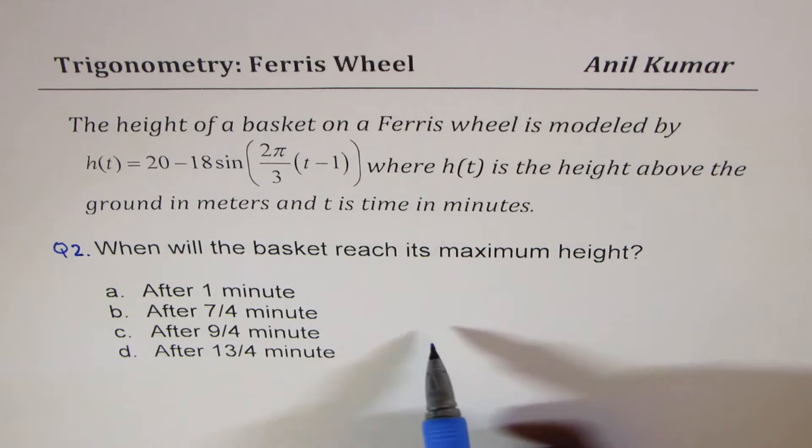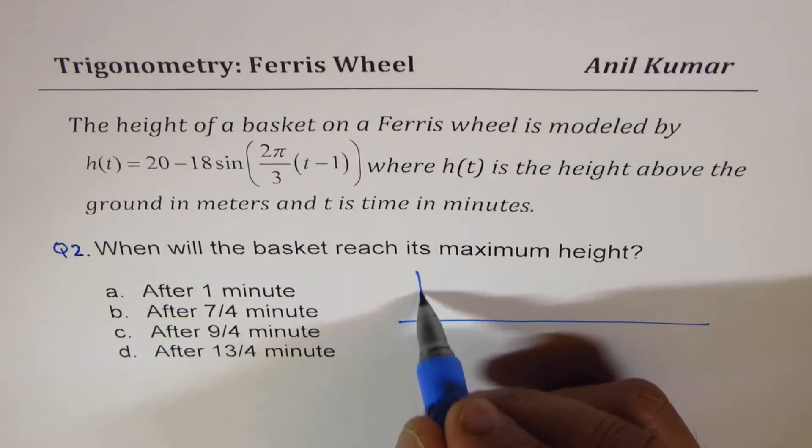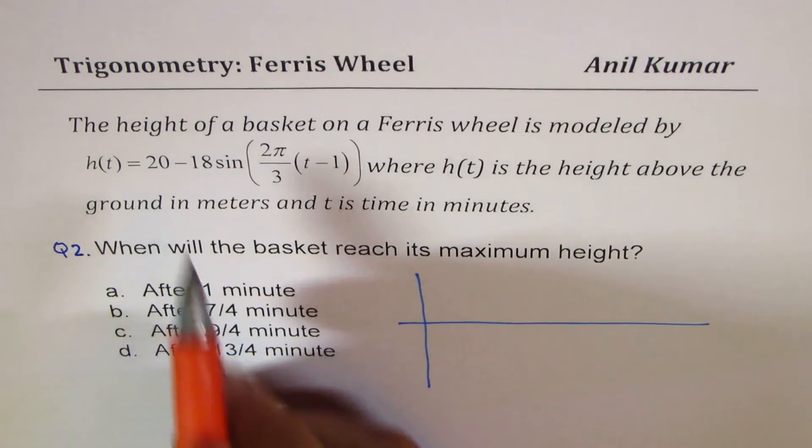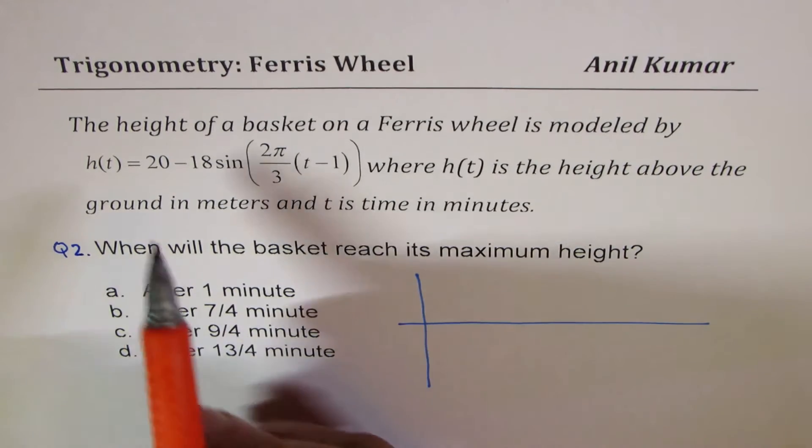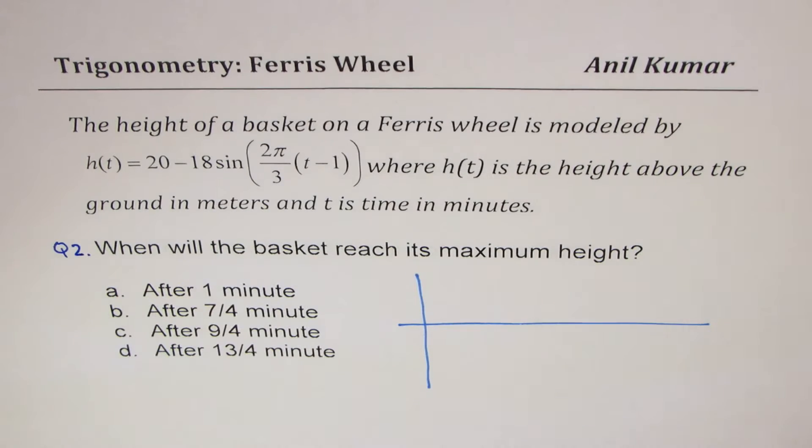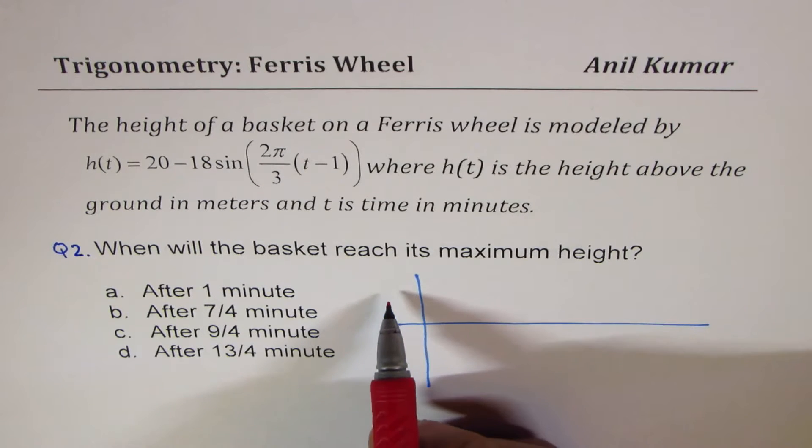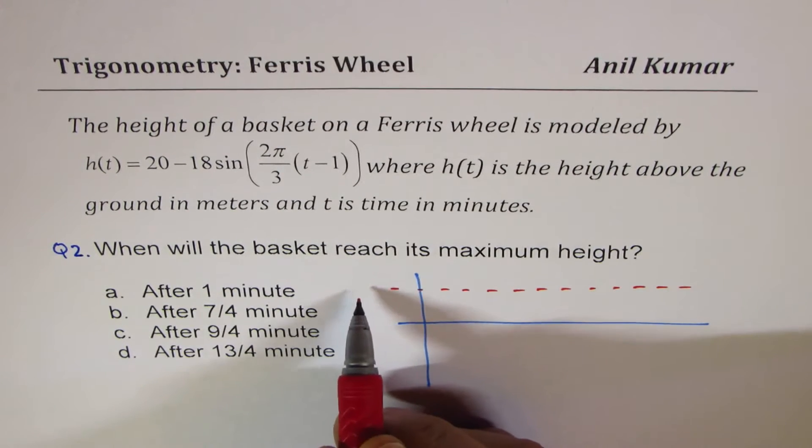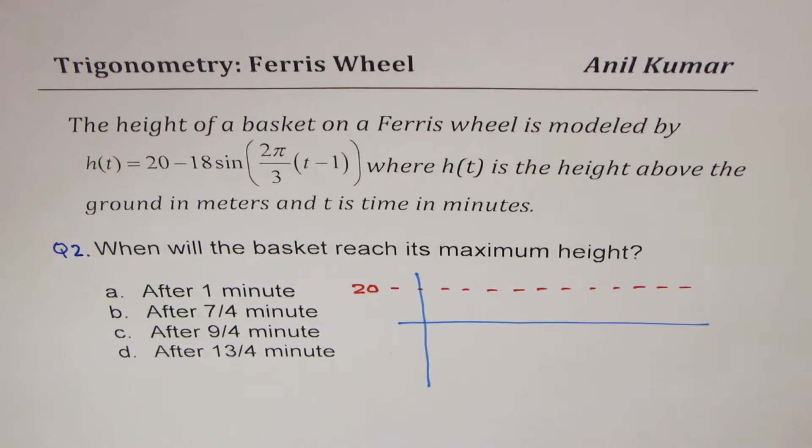Now, let me sketch this and then we will discuss it further. It will help us to understand the rest of the answers also. Basically, we have a sine function. Negative means it starts from kind of like this. And 20 means that it is 20 meters above the axis of this particular thing. So we can draw the axis. Let us say this is the axis now.